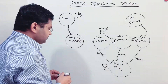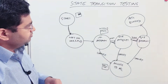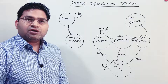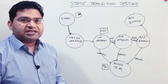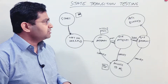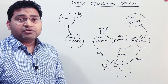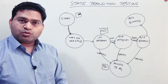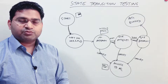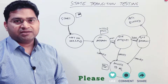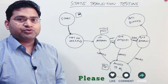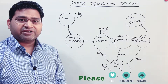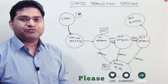So those are the four key things — states, transitions, events, and actions — to understand in detail for state transition testing. This black box test design technique is very helpful and will be asked very frequently in software testing interviews. Hope this was helpful and clear. Please do share and subscribe, and thank you very much for watching.